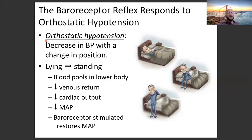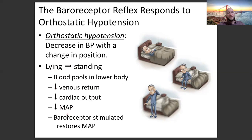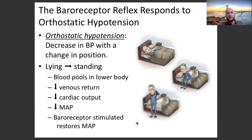Orthostatic hypotension is a decrease in blood pressure with a change in position. Blood pools in the lower parts of the body, which decreases venous return. If you don't have blood going back to your heart, your heart can't pump blood out, so you don't maintain blood pressure and you get dizzy for a few seconds. Then your baroreceptors kick in, do all the above, bring your pressure back up, and you return to normal.